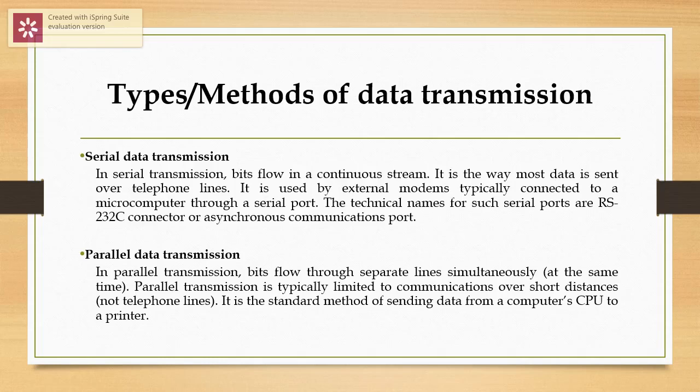What are the types or other methods of data transmission? We have two types. The first one is serial data transmission. In serial data transmission, bits flow in a continuous stream. It is the way most data is sent over telephone lines, and it is used by external modems typically connected to a microcomputer through a serial port. The technical names for such serial ports are RS-232C connector or a synchronous communications port.